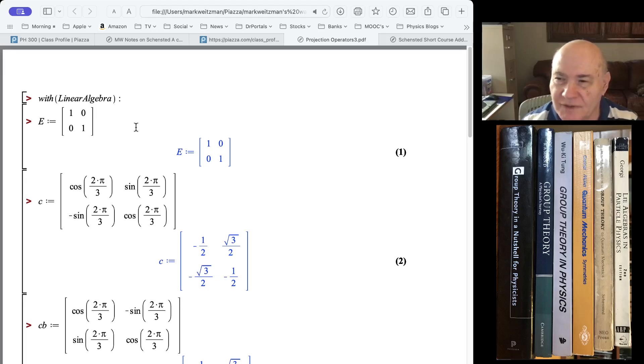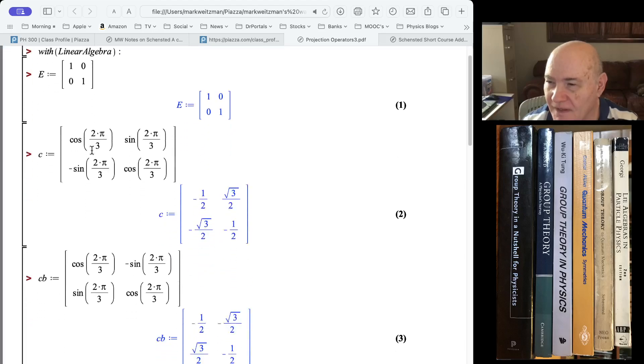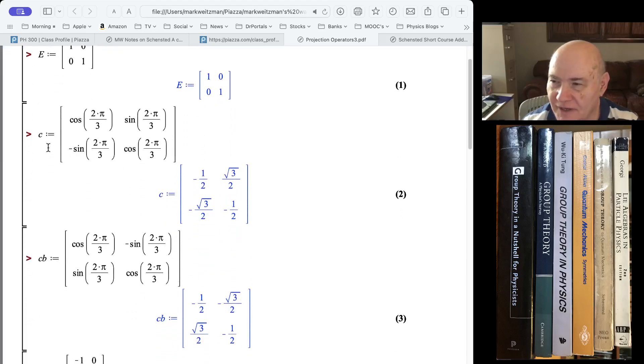We have the mappings on the plane. Remember, we have that triangle and points get mapped into points. So E is just the identity element. That doesn't change any points. We only have X and Y coordinates.